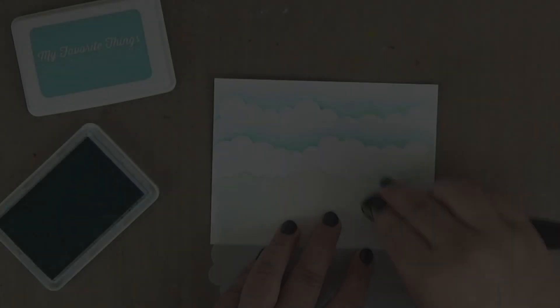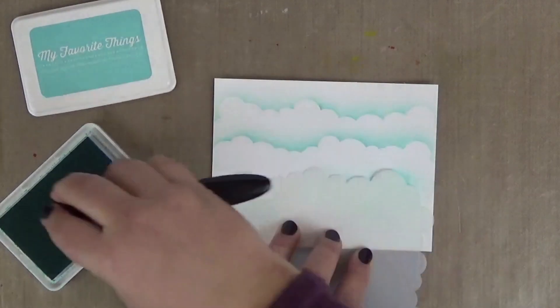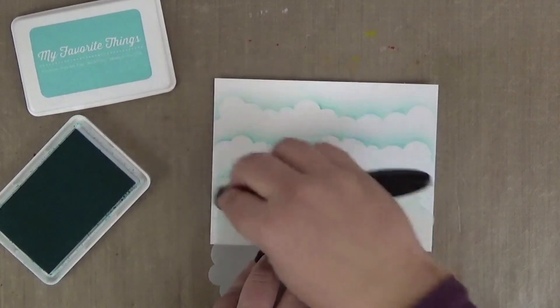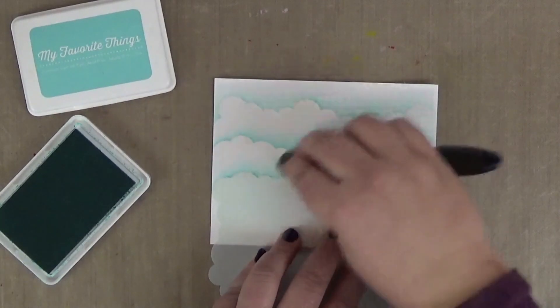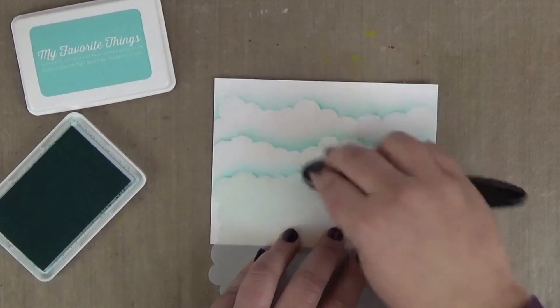Okay, let's get right to it and start with the background. Here I'm inking a piece of smooth white cardstock with some blue raspberry premium dye ink and the mini cloud edges stencil. I'm using an ink blending brush and a very light touch to avoid harsh lines.